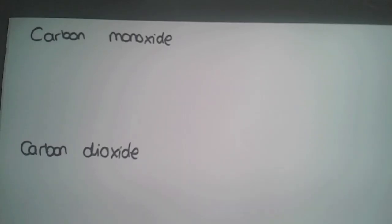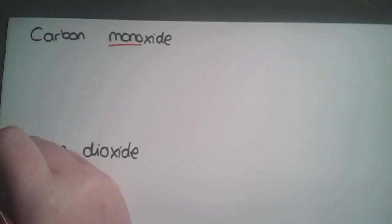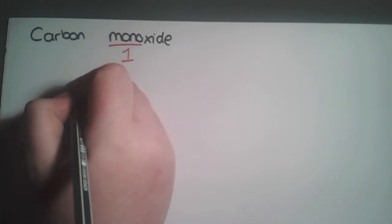For these types of compounds, when we're writing the formula, we look for the prefix in the name, and that tells us the number of each type of element that we have. For the first example, we have carbon monoxide, mono being the prefix meaning one.